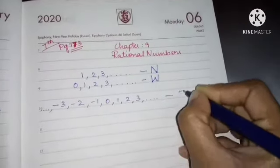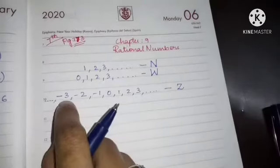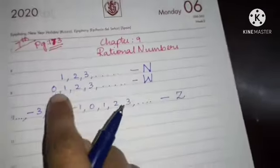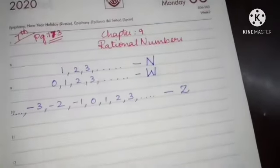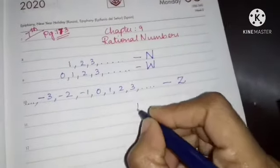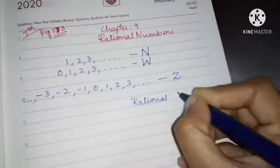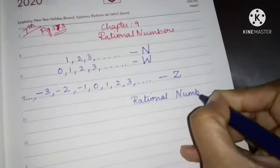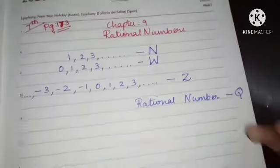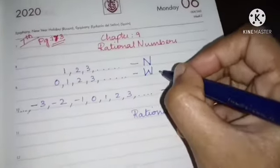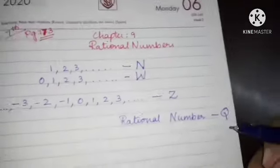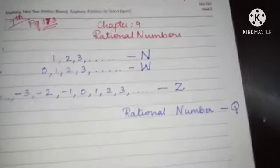So we have natural numbers, whole numbers, and integers. The next number you are going to learn about is rational numbers. Rational numbers are denoted by the capital letter Q. For natural numbers we use N, whole numbers W, integers Z, and for rational numbers we use Q.